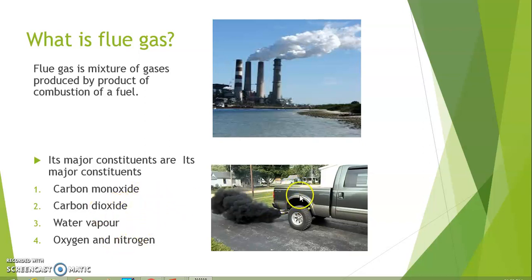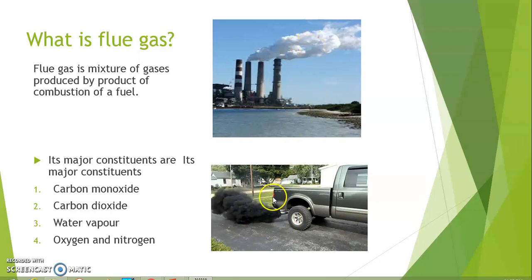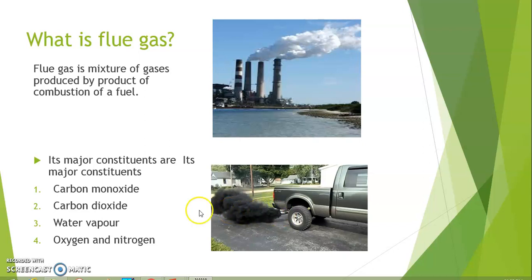By analyzing the flue gas, we can determine how efficient the combustion is. Combustion efficiency is not always the same. For example, some gas emissions appear white in color while government buses emit black-colored gas — we can judge the quality of combustion from this.